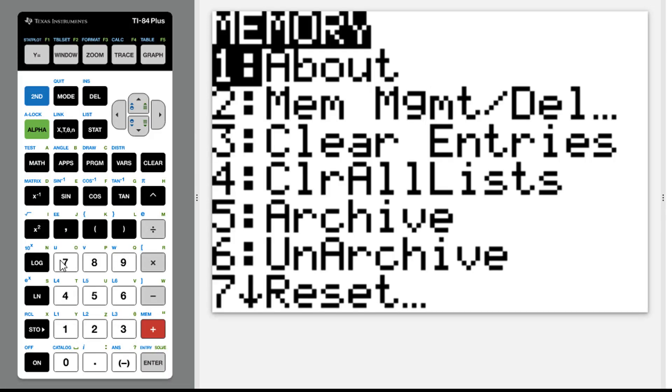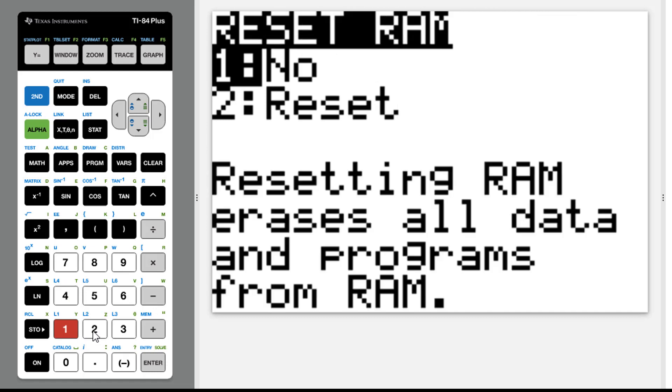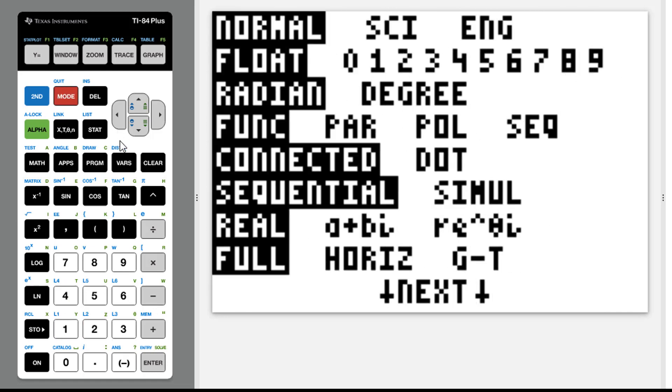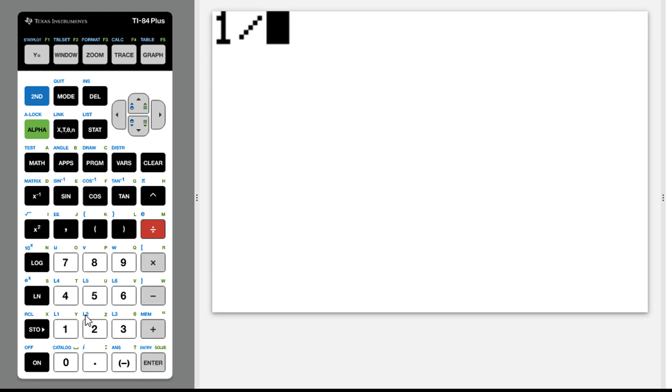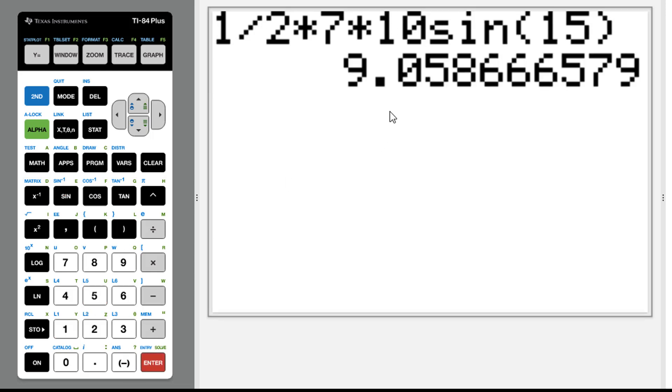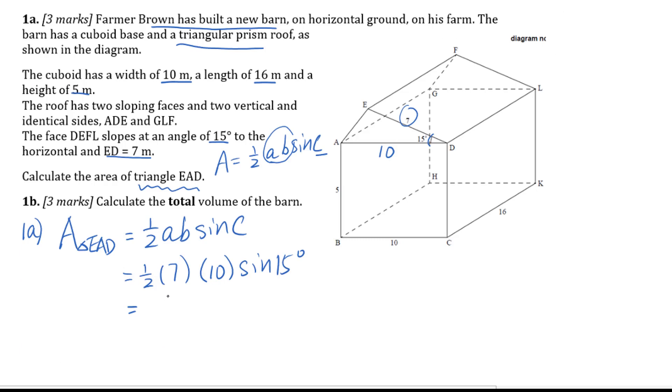First of all clear the memory, then go to mode. Make sure you set up the angle in degree. Then quit. I will put 1 divided by 2 times 7 times 10, then sin 15 degrees. Enter. 3 significant figures, 9.06. So I got 9.06 meter squared. That's for 1A.